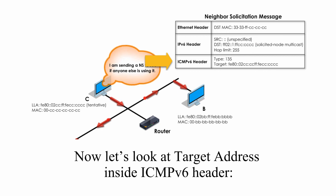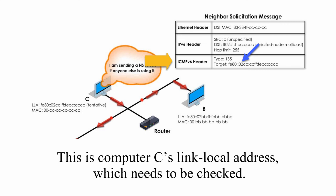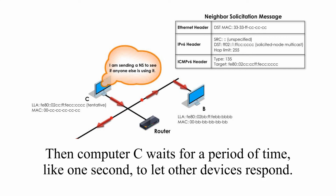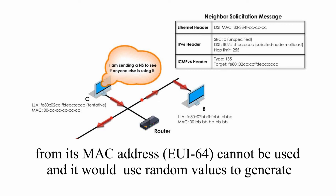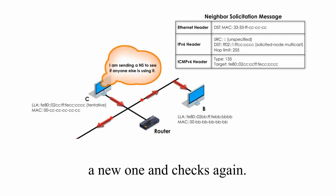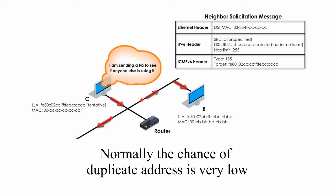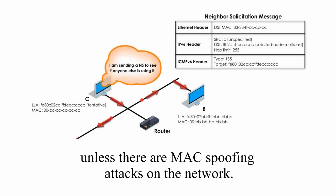Now let's look at the target address inside the ICMPv6 header. This is Computer C's link-local address, which needs to be checked. Then Computer C waits for a period of time, like one second, to let other devices respond. If duplication occurs, Computer C would determine the link-local address derived from its MAC address cannot be used, and it would use random values to generate a new one and check again. Normally, the chance of a duplicate address is very low unless there are MAC spoofing attacks on the network.